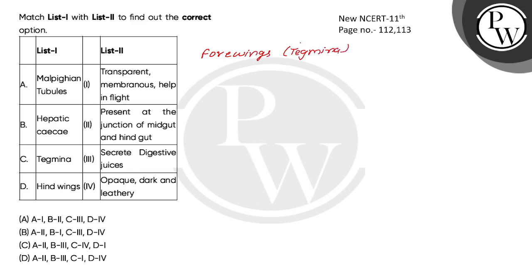Where do Tegmena arise from? They arise from the Mesothorax. These are opaque, dark, and leathery — they cover the hind wings when the insect is at rest. So here, Tegmena correctly matches with opaque, dark, and leathery.